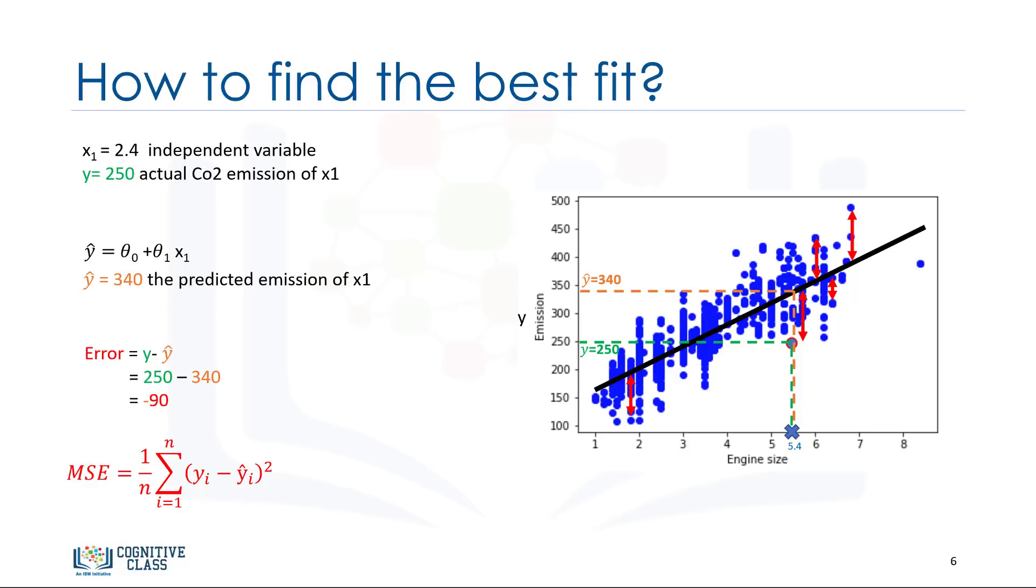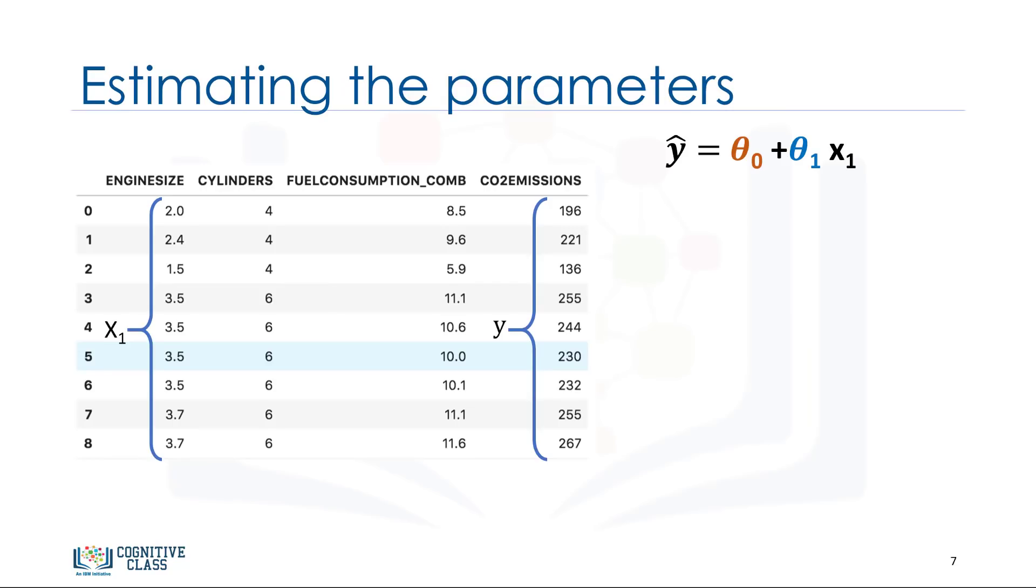Actually, we have two options here. Option one, we can use a mathematic approach. Or, option two, we can use an optimization approach. Let's see how we can easily use a mathematic formula to find the theta0 and theta1.